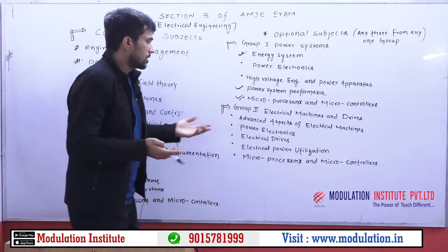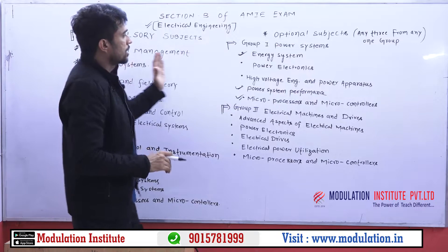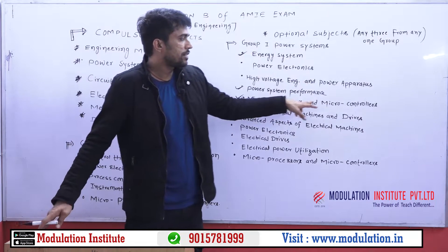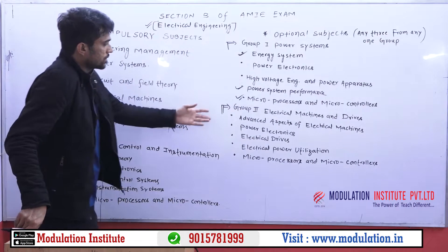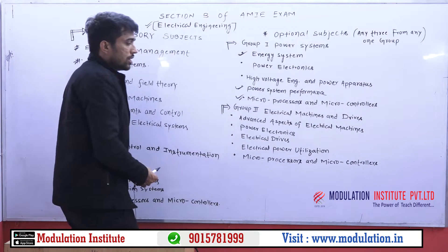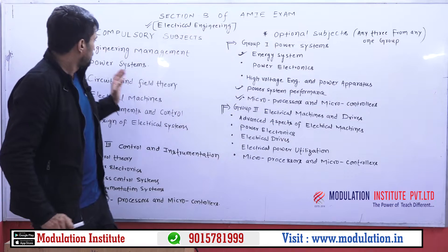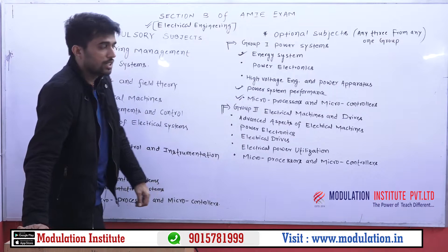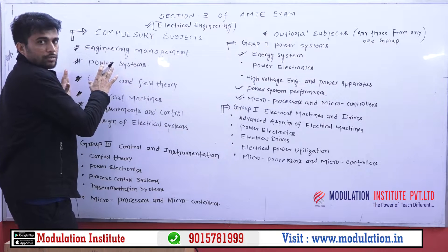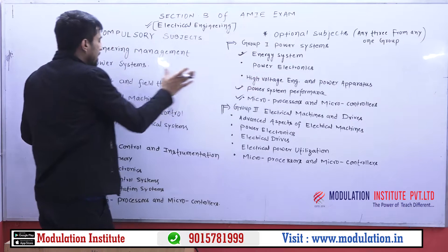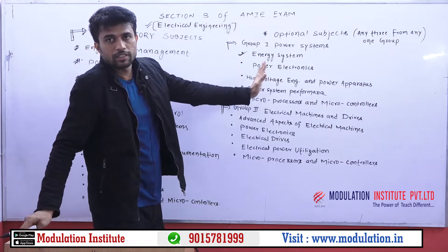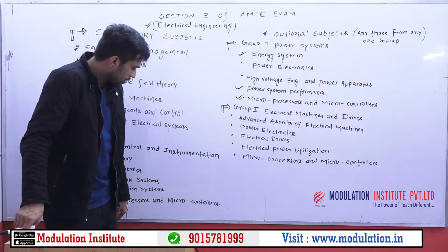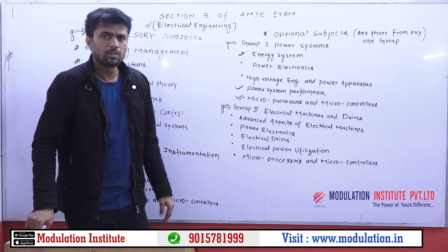If you complete all the compulsory subjects and then choose from Group 1 — energy system, power system performance, and microprocessor and microcontrollers — it's done. Microprocessor and microcontrollers is mentioned in all three groups, so whichever group you choose, you should pick this subject. It is very easy, no big theories, just small concepts. You can learn it logically — it covers memories, instructions — all very good concepts.